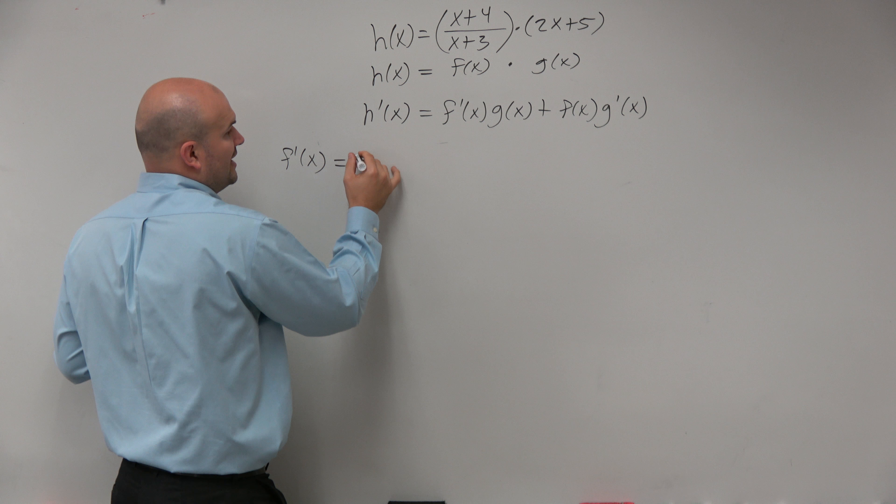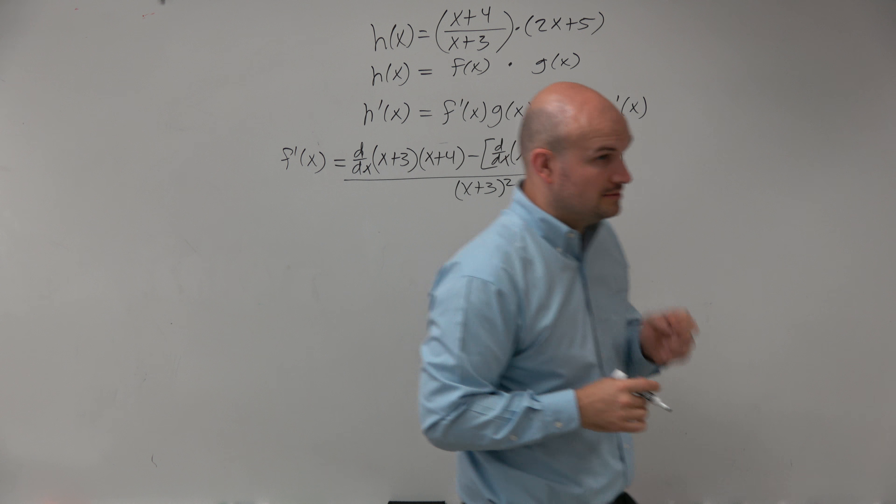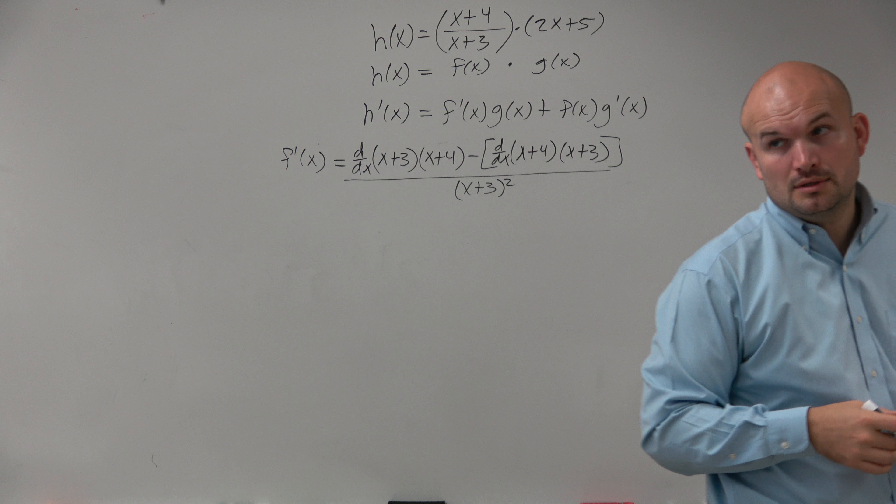f prime of x is going to be — you're going to have your numerator and your denominator — so you're basically going to be looking at d over dx of your denominator times your numerator minus your numerator times the derivative of your numerator times your denominator, all over the denominator squared.